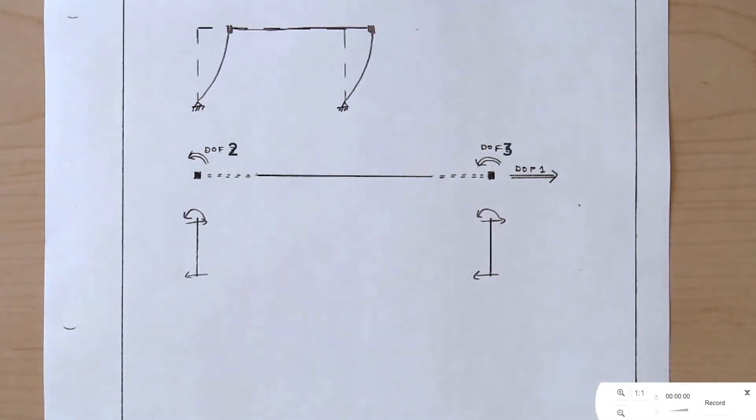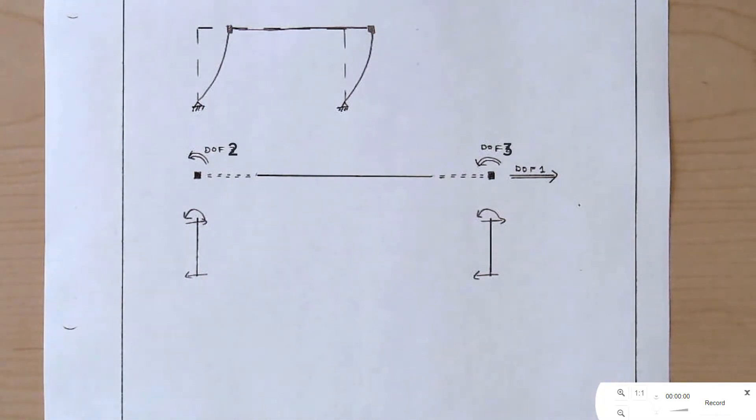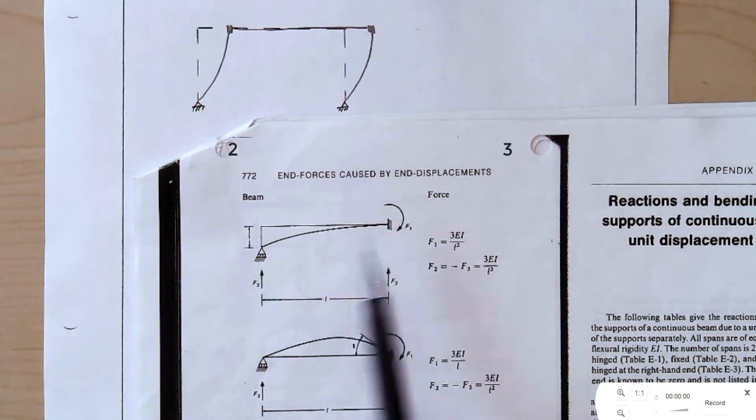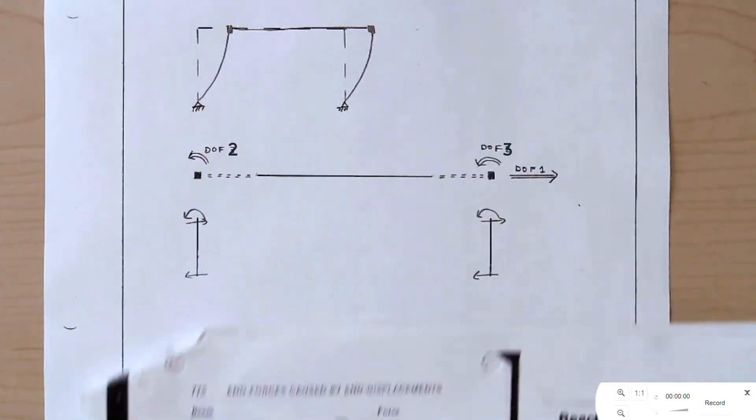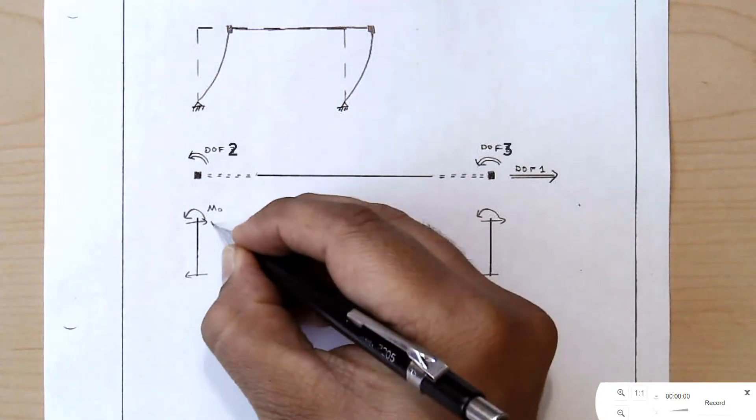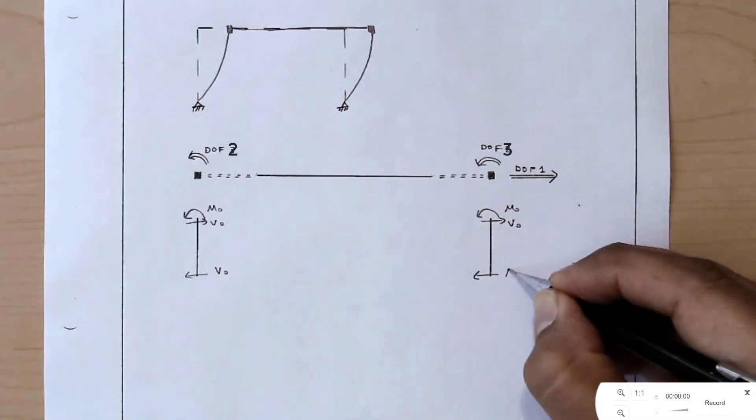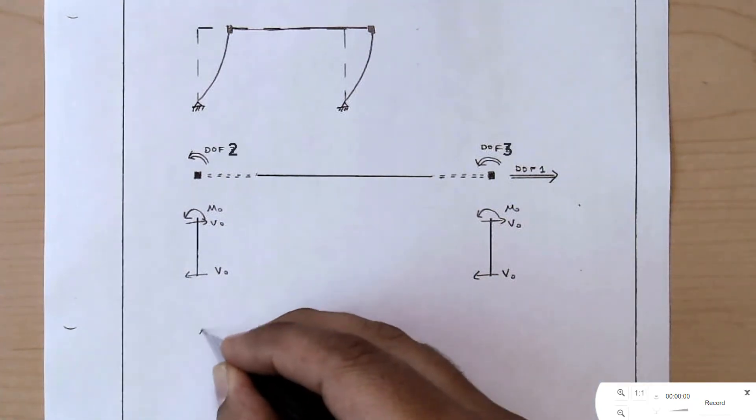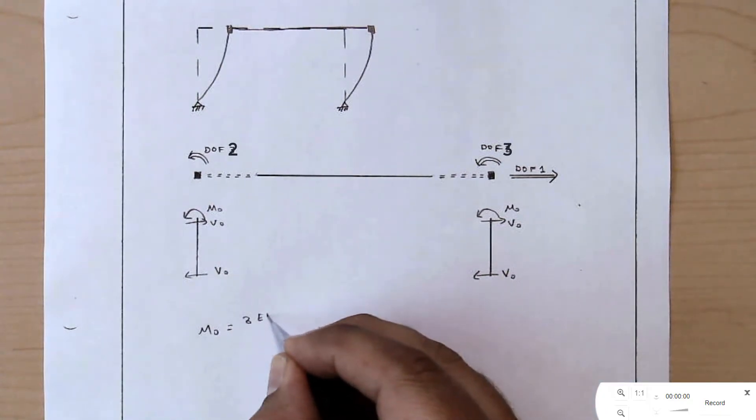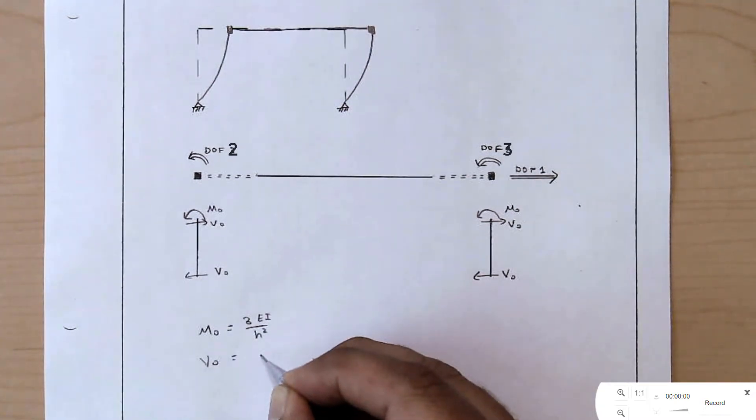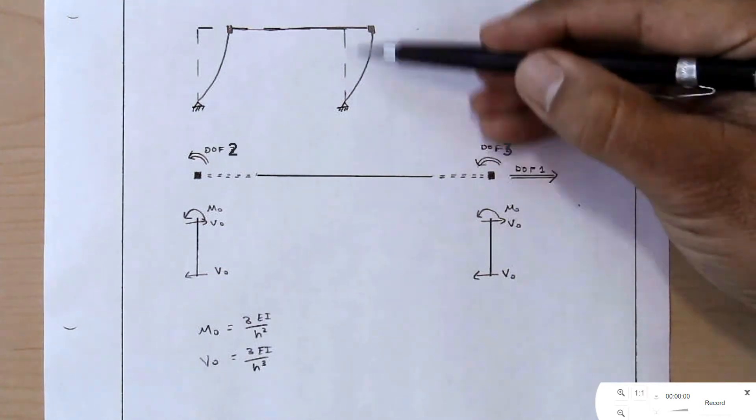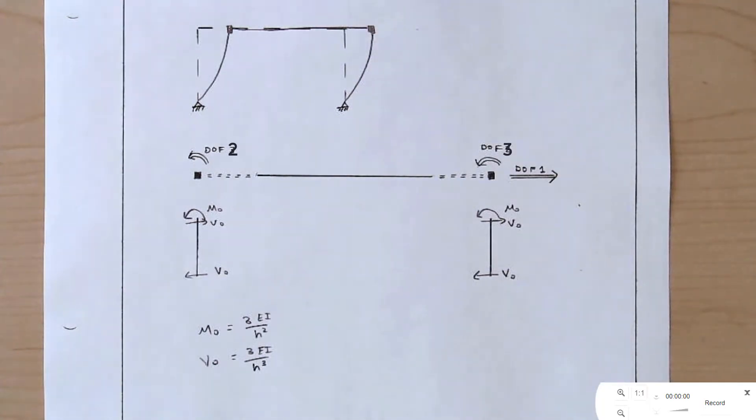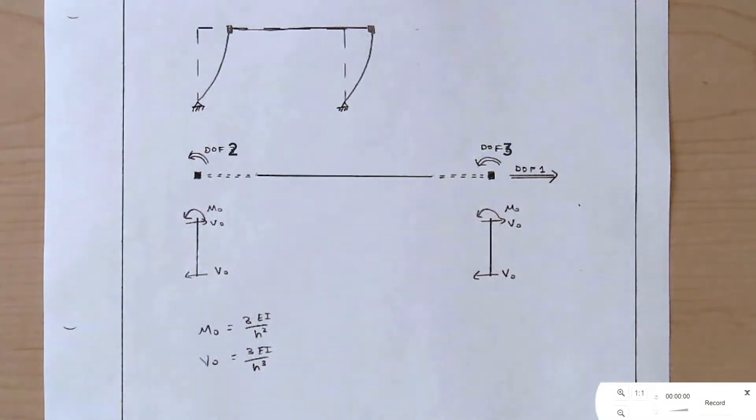This moment is causing a counterclockwise rotation, so the corresponding shears must cause a clockwise rotation. What are the values of these? Well, we'll flip out our trusty appendix. And we have, right here, moment free end, a translation. The moment is 3EI over L squared. The shears are 3EI over L cubed. I'm going to label these M0 and V0. And we'll indicate that M0 is equal to 3EI over H squared. You'll notice that I'm using H because H is this vertical dimension right here, so I'm not just plugging in blindly to the values in the table.